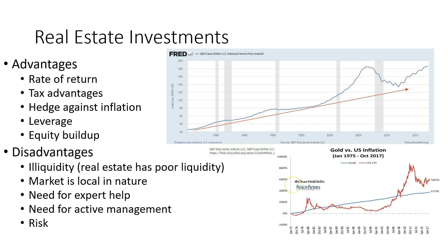Looking at real estate investments, the advantages are that the rate of return is usually good, it has tax advantages, and it's a hedge against inflation. According to the Feds, house prices went up and down but were always ahead of inflation — the red line on the chart. Real estate is also still ahead of gold, if you bought some back in 1975.